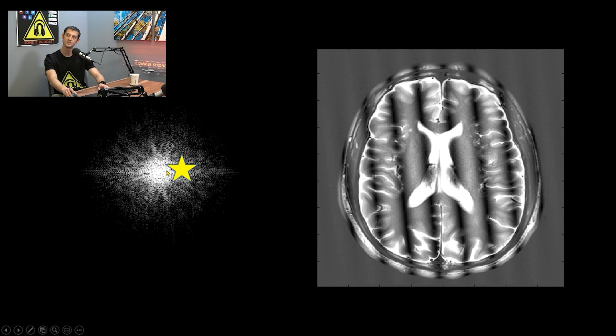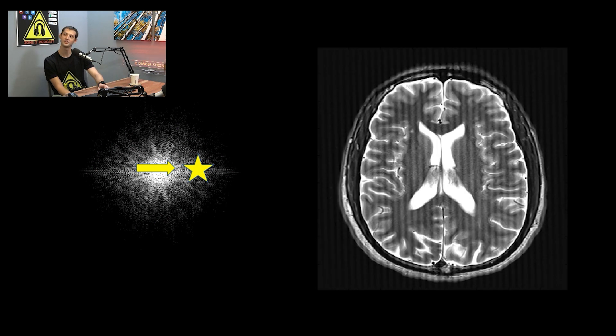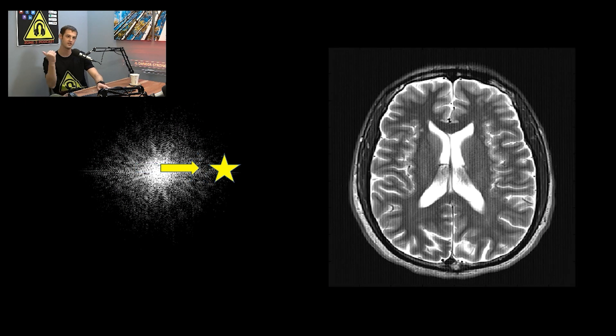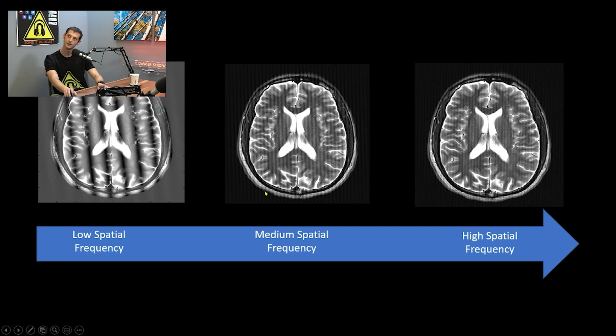Because the bright pixel is fairly close to center, you get a slower frequency pattern. If you shift it out to the right — higher frequency — the lines are the same direction but much tighter. Moving it to a middle distance gives a medium frequency pattern, which is what you most commonly see clinically. Moving it even further out gives the tightest, highest spatial frequency lines.